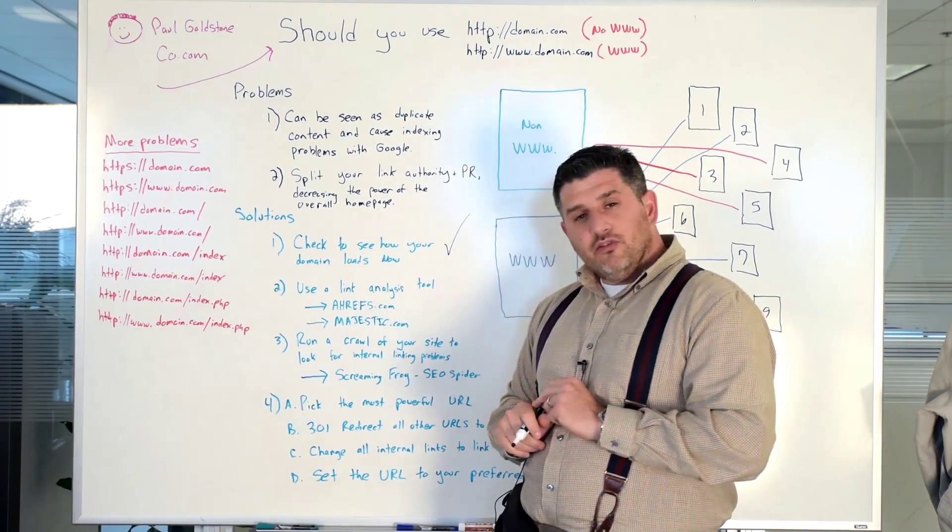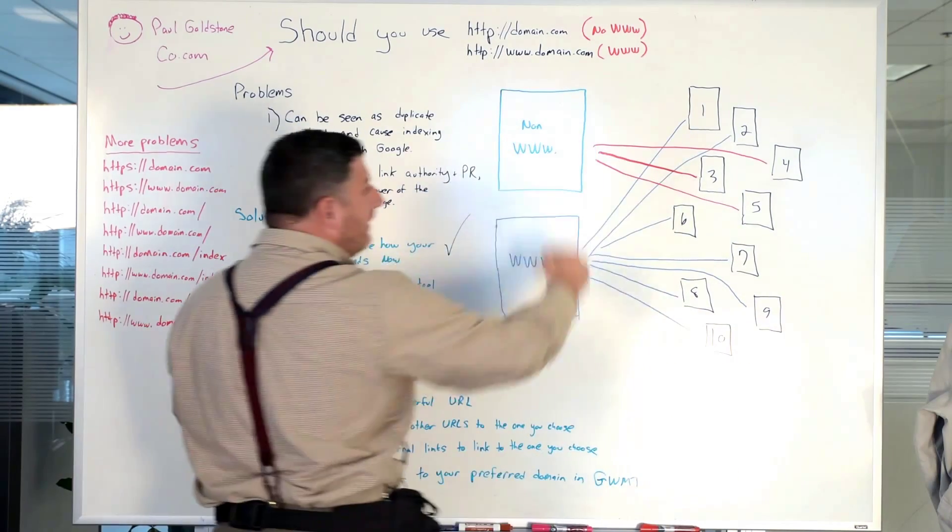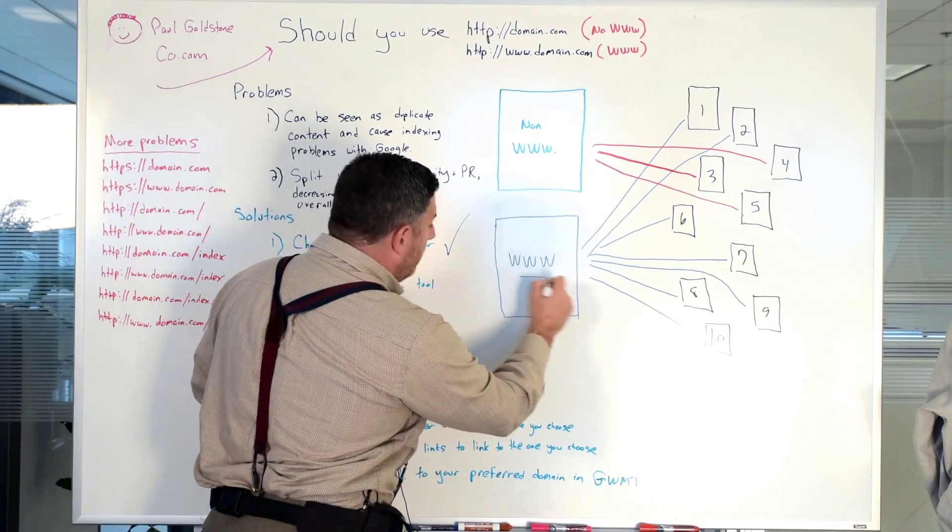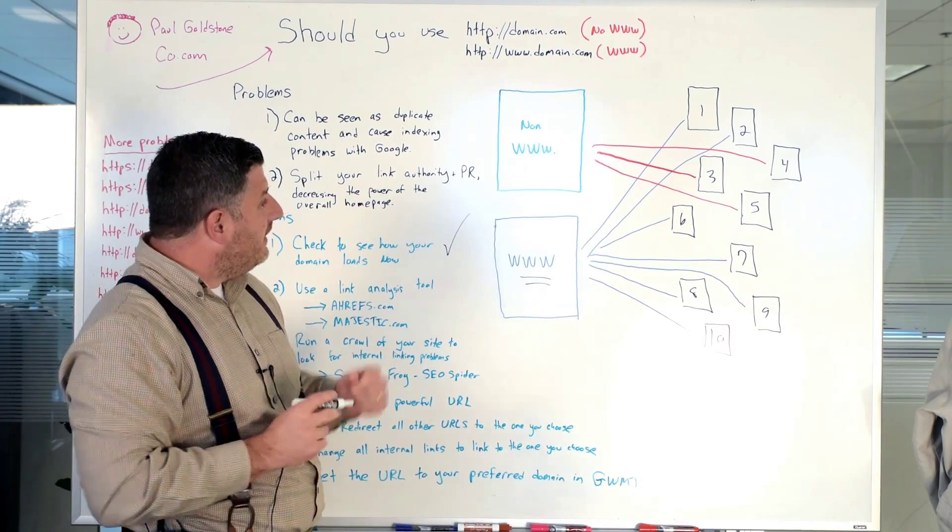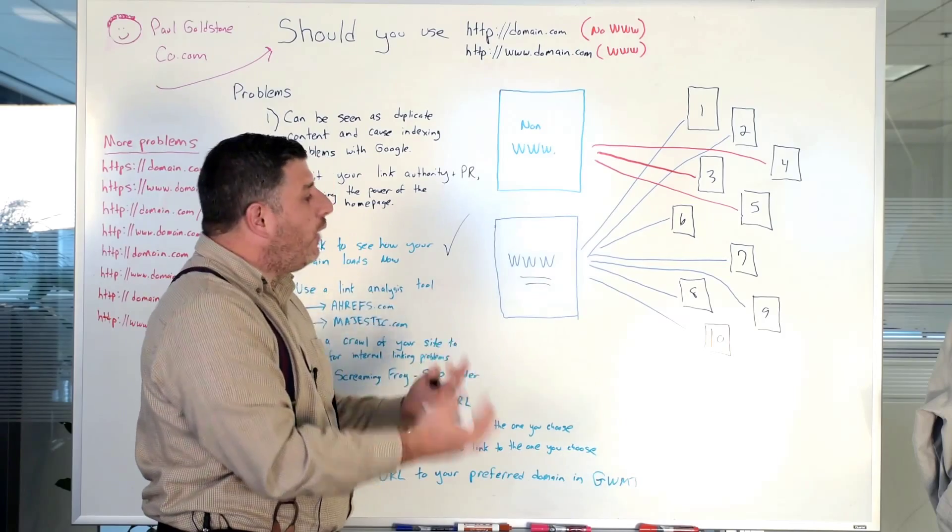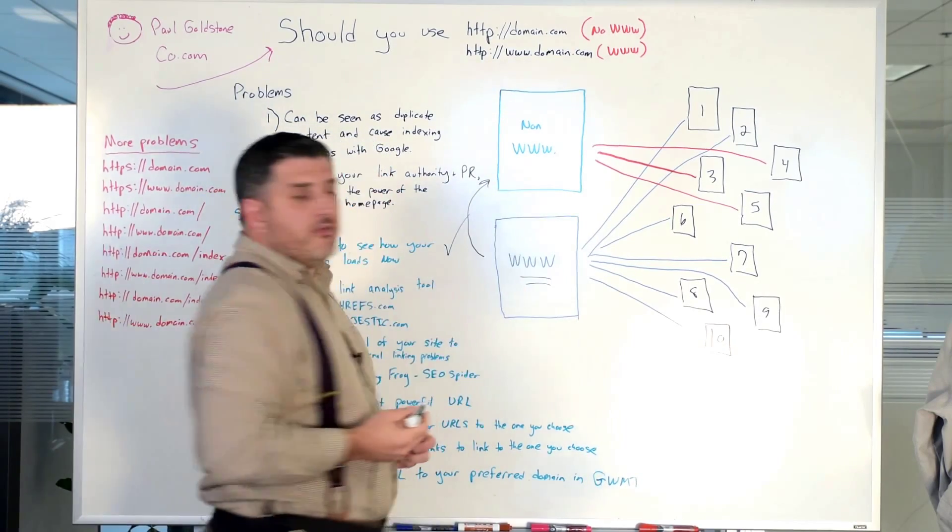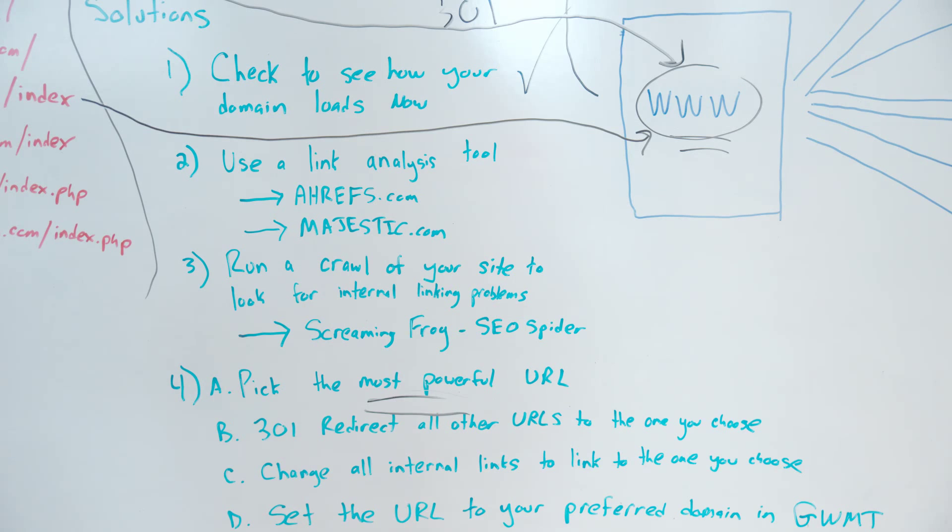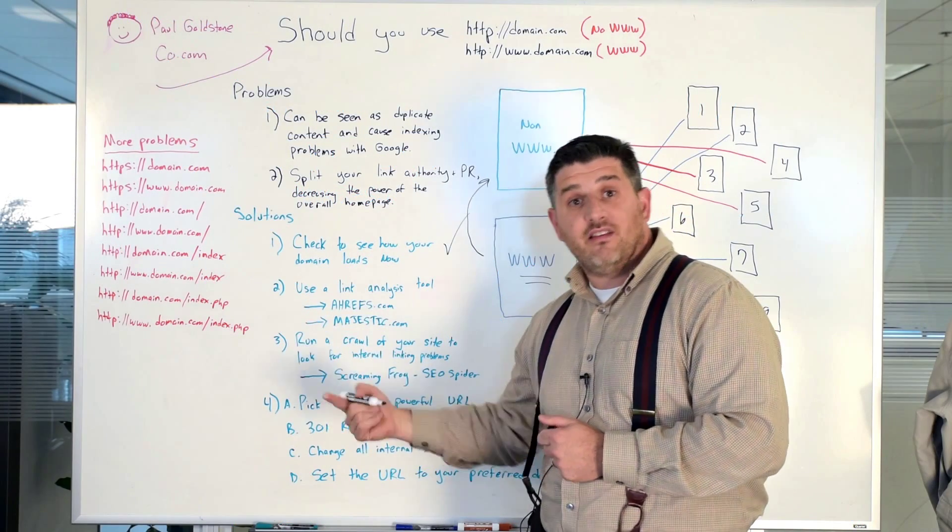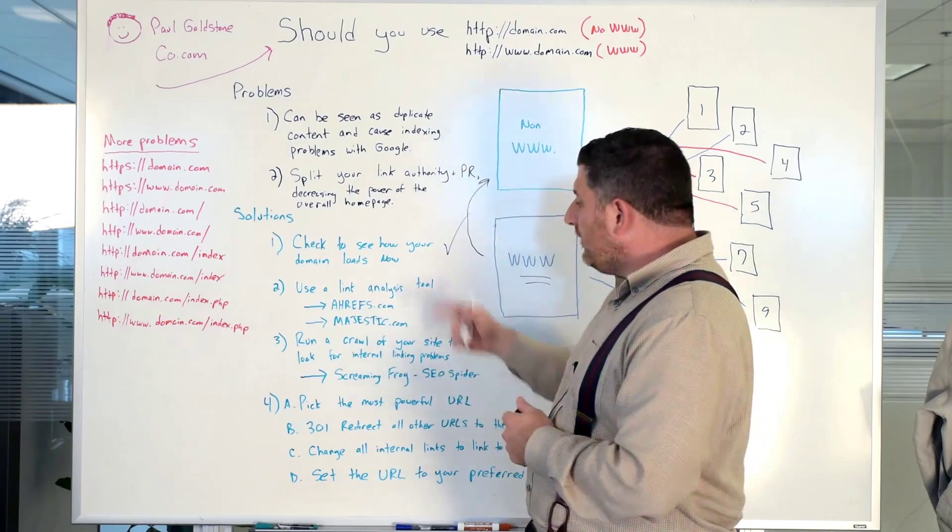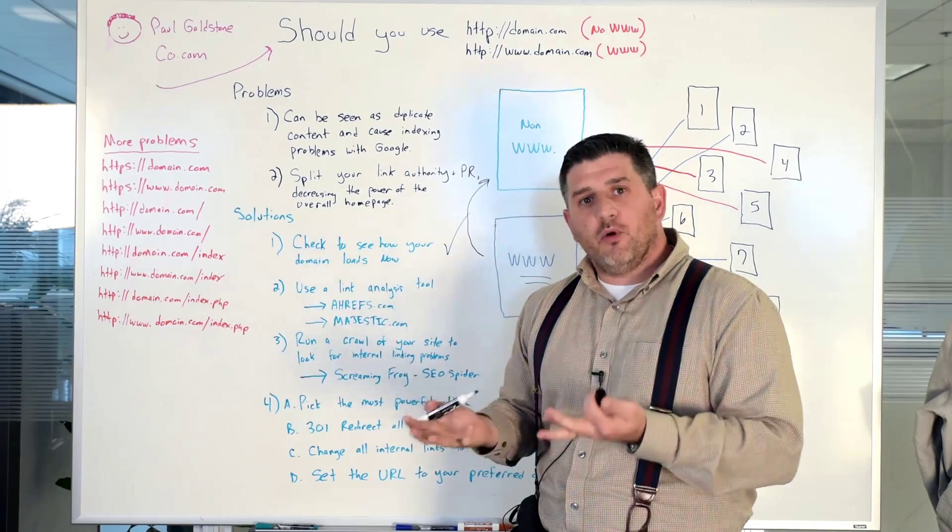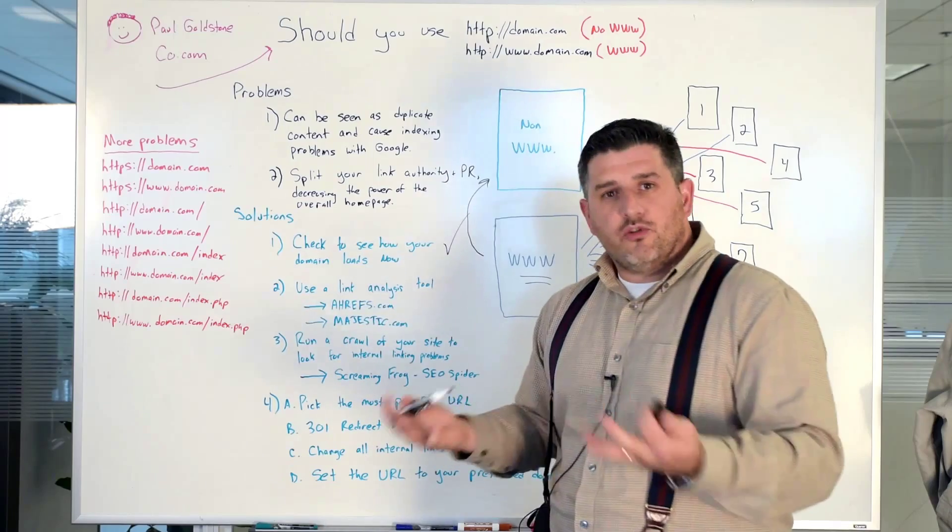The second thing is there's link analysis tools so that you can actually go and study where are most people linking to. So if more people are linking to your www version, well, you might want to use that one, right? Because that's where all the popularity is being pointed. So why try to 301 redirect that and lose some of the page rank when you do that? So you can use a couple tools. The first tool is ahrefs.com and the second is majestic.com. It's formerly Majestic SEO. So those are good link analysis tools. And you'll just go in there and you put your URL in there with the www and without the www and see which one has more links pointing back to it. And that will give you a good idea of which one that you probably want to use.